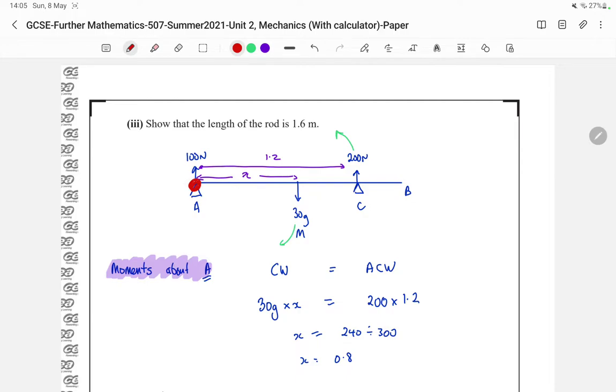So my clockwise moments acting around A, I have this 30g. 30g, and it is acting at a distance of X meters. So that 30g is acting in a clockwise motion around A at a distance of X meters.